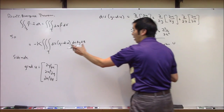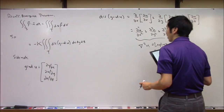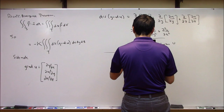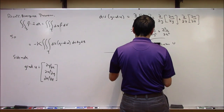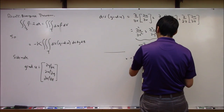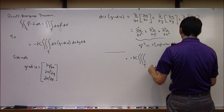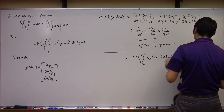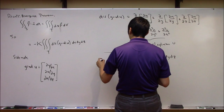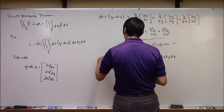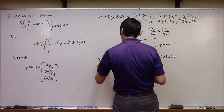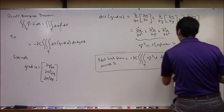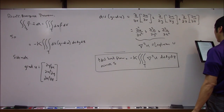Substituting back, the total heat flow across surface S becomes -K times the triple integral over the volume T of the Laplacian of U dxdydz. This is one expression for the total heat flow across S. Let's box this up and use it in a moment.